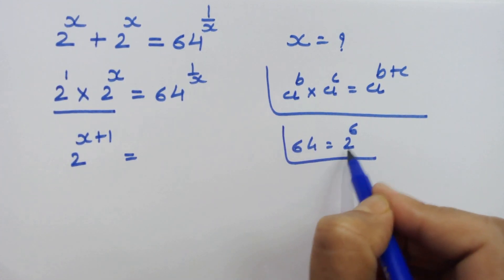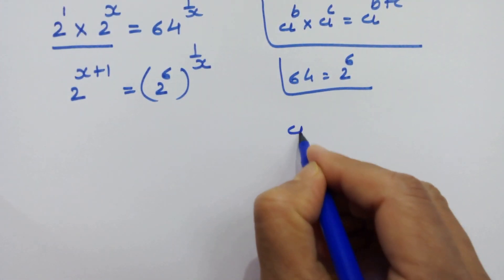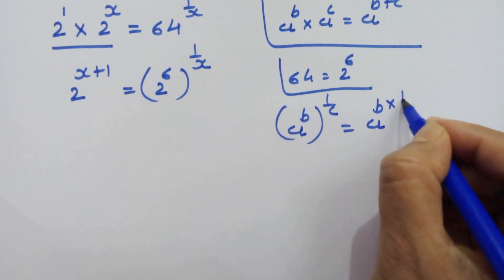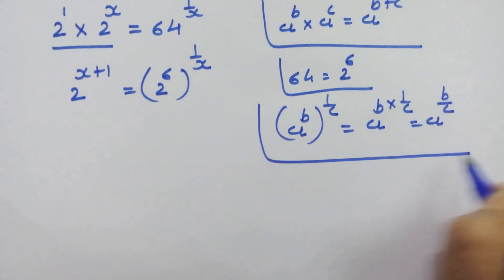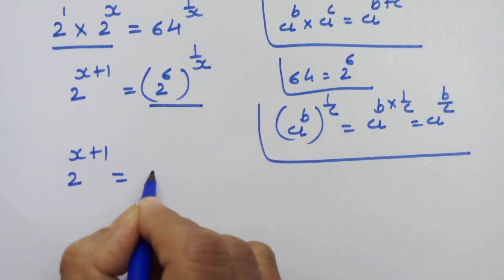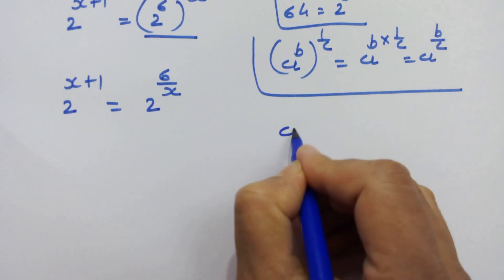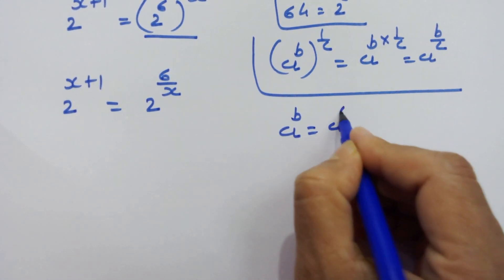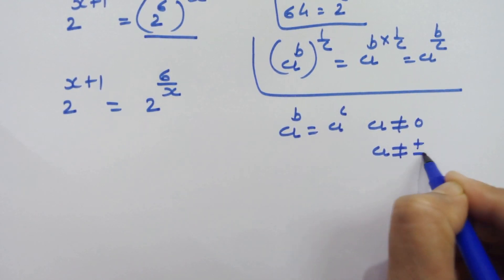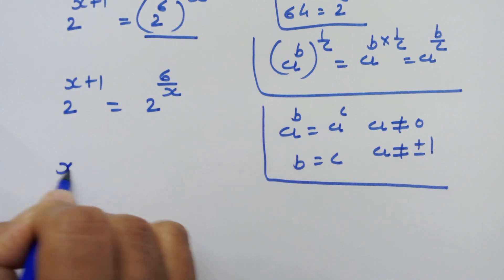So we have 2 raised to x plus 1 is equal to — now 64 is equal to 2 raised to 6, so in place of 64 we can write 2 raised to 6 here: 2 raised to 6, whole raised to 1 upon x. If we have a raised to b, whole raised to 1 upon c, then we can write a raised to b upon c. So here we can write 2 raised to x plus 1 is equal to 2 raised to 6 upon x. We can see the same base on both sides.